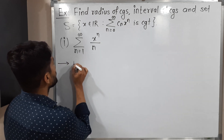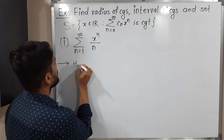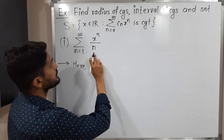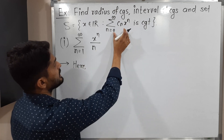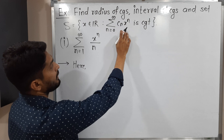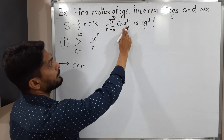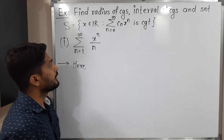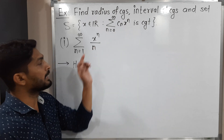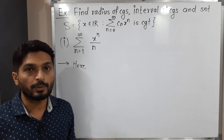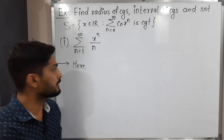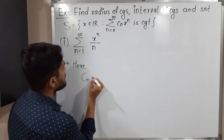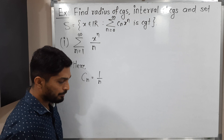I will compare this power series with a standard power series. This is the standard power series, and the multiple of x raised to n is Cn. So here the multiple of x raised to n gives us our Cn.